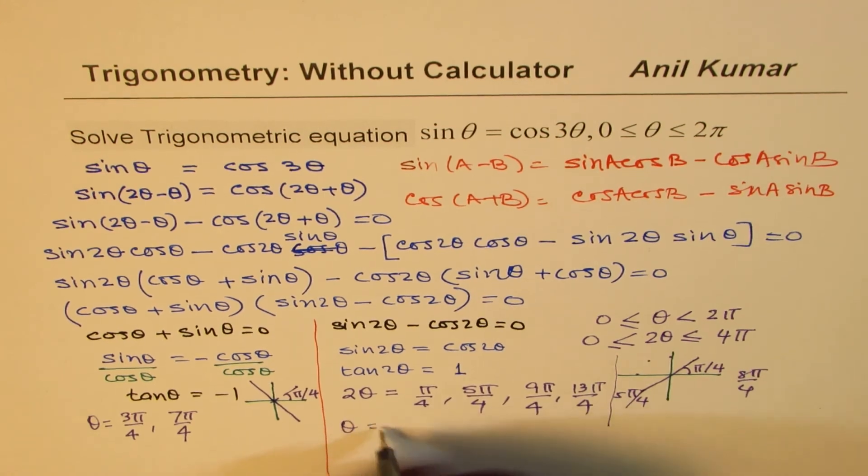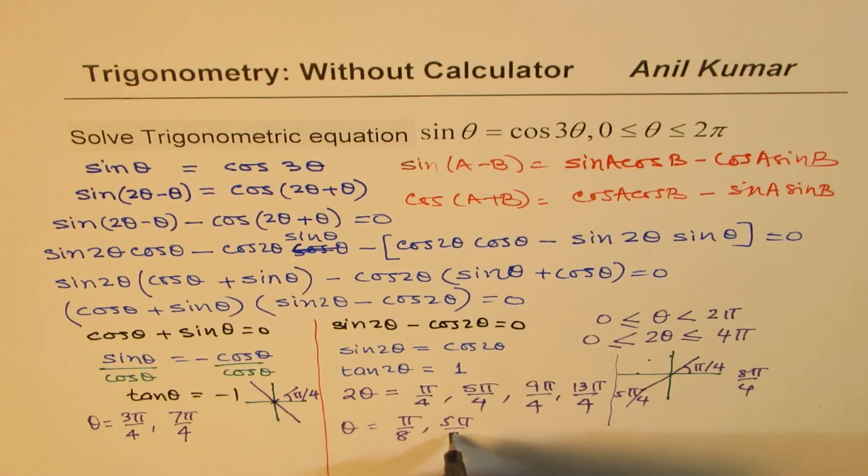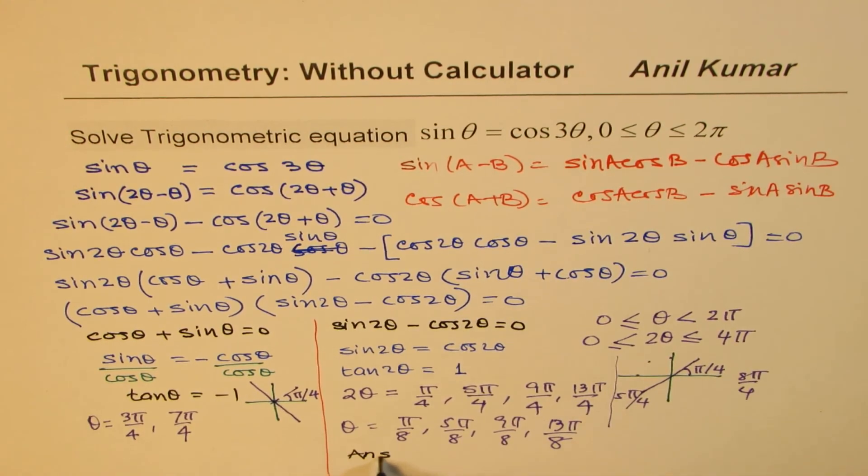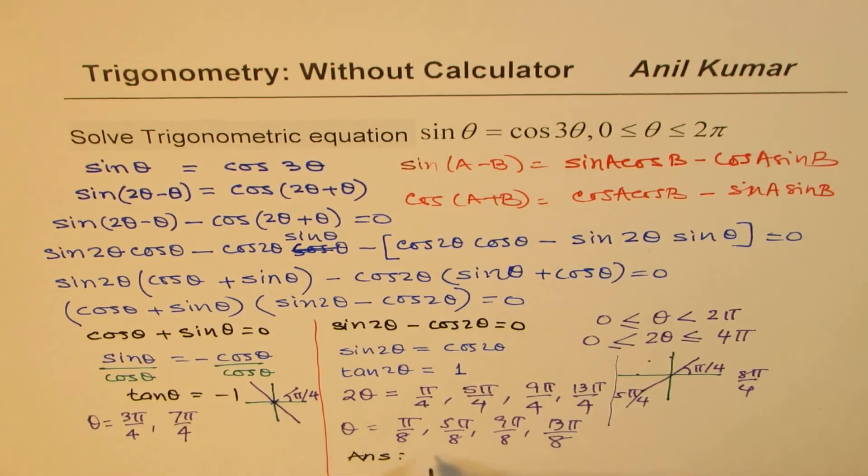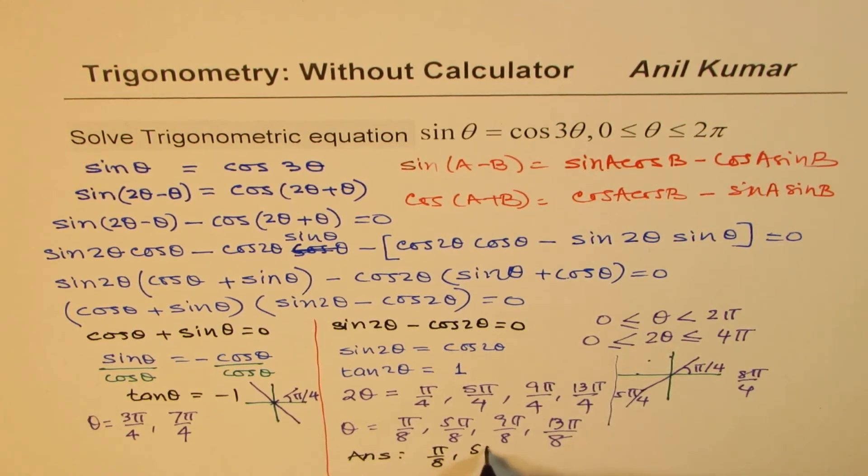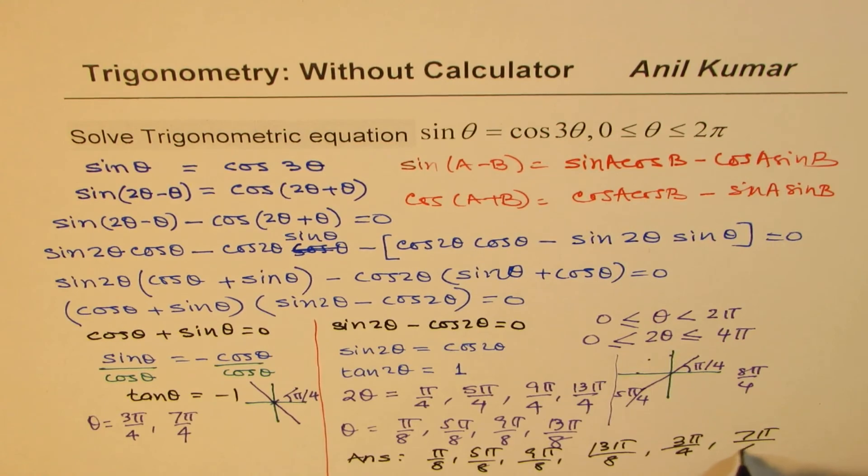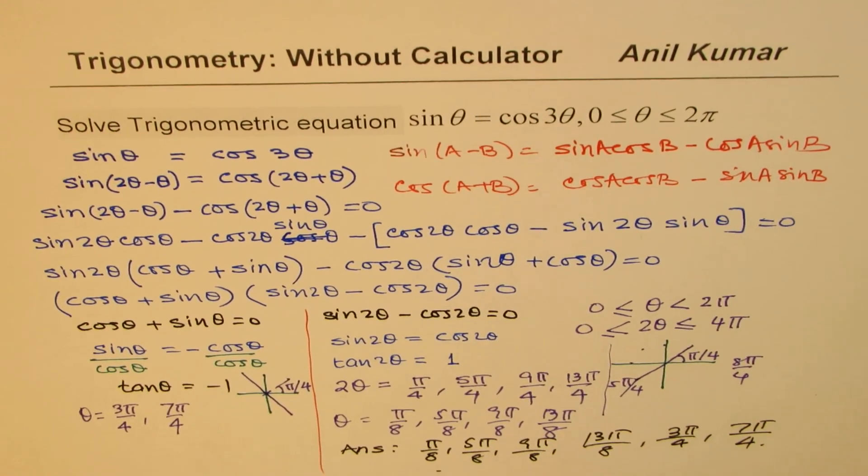Now theta equals half of these values. So it is pi by 8, 5 pi by 8, 9 pi by 8, and 13 pi by 8. So that is how this question should be solved. So our answer is pi by 8, 5 pi by 8, 9 pi by 8, 13 pi by 8, and 3 pi by 4 and 7 pi by 4.